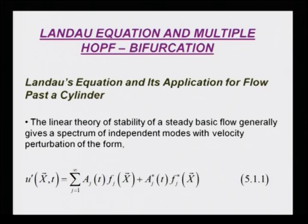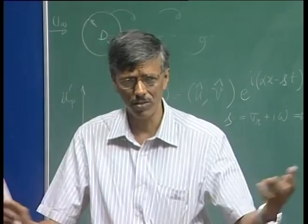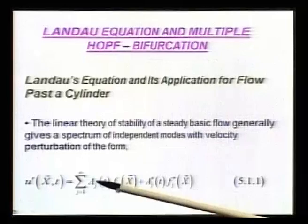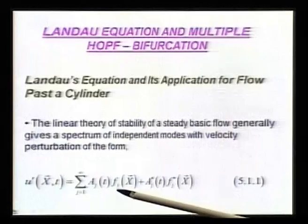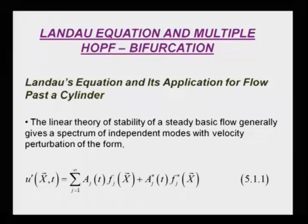The linear theory of stability of the steady basic flow gives us a spectrum of modes with velocity perturbation in a specific form. What we have done is essentially a Galerkin projection - we split out the space dependence and the time dependence. A(t) tells you the temporal variation, and f corresponds to the modes we are talking about, the eigenfunctions, the modal representations.